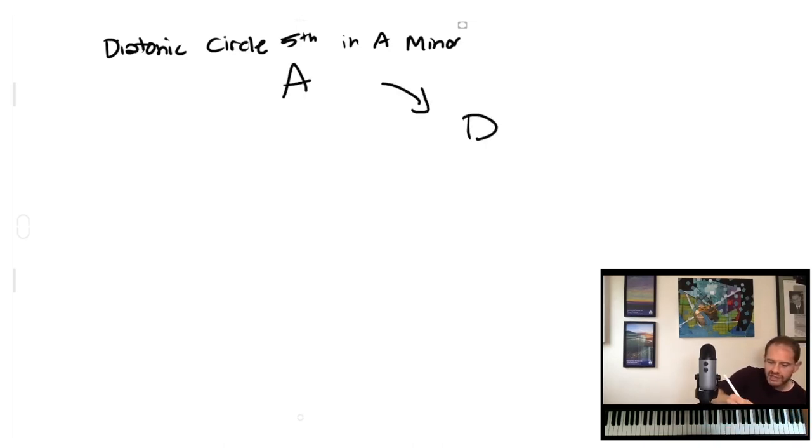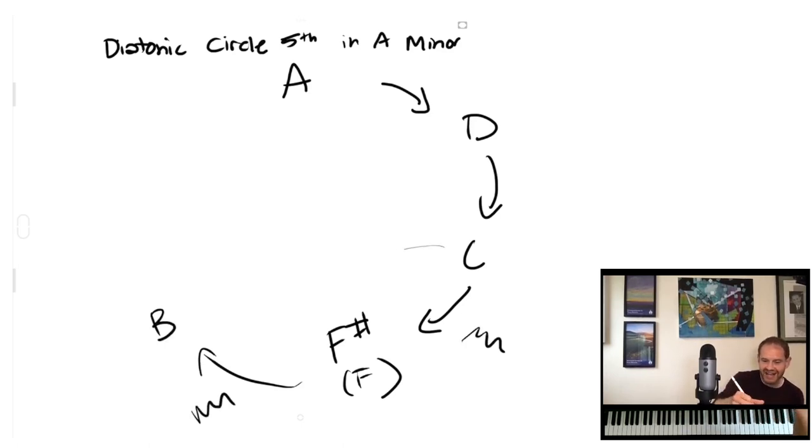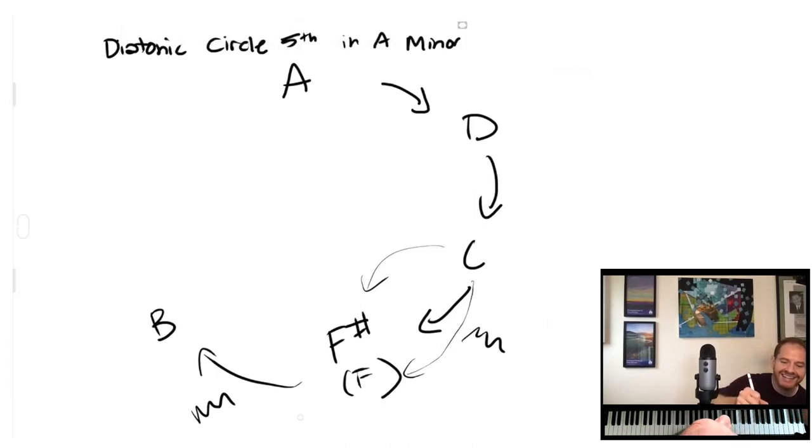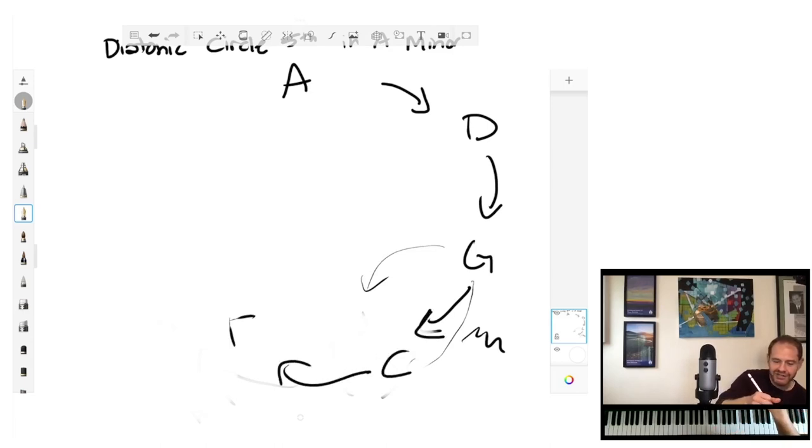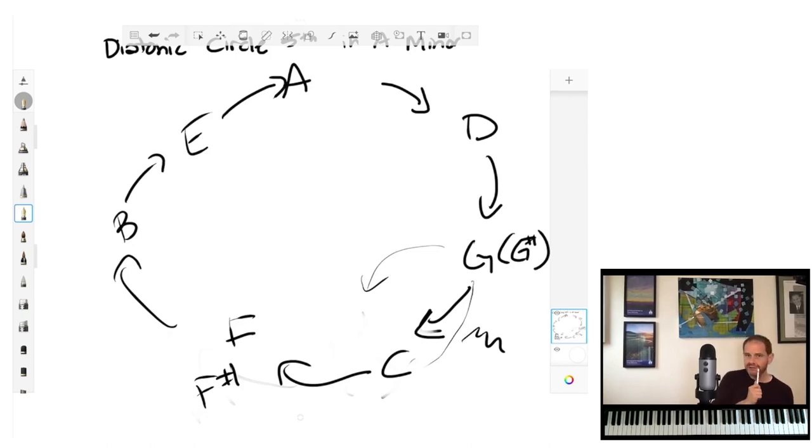Now things get more interesting as we go to a minor key. That's because the word diatonic doesn't really quite apply to minor the same way that it does major. Everybody knows what we mean when we say that we're diatonic in a major key, but there's not just one minor scale. Actually, I'm going to do this in A minor. We have our natural minor scale, harmonic minor scale, melodic minor scale. So we can use notes from each of those different scales in our diatonic circle of fifths in minor, which means we're going to have different options as to what sorts of chords we're going to be able to use.